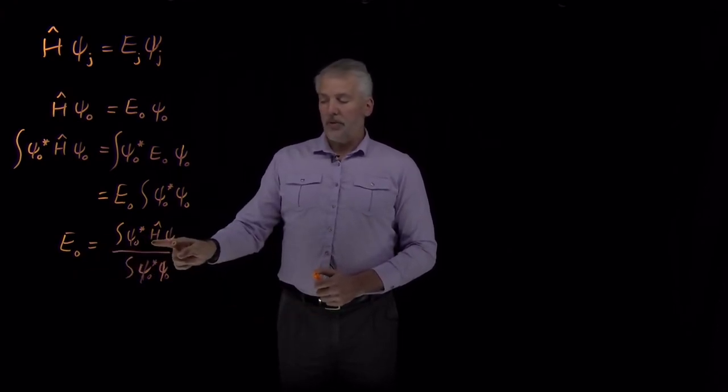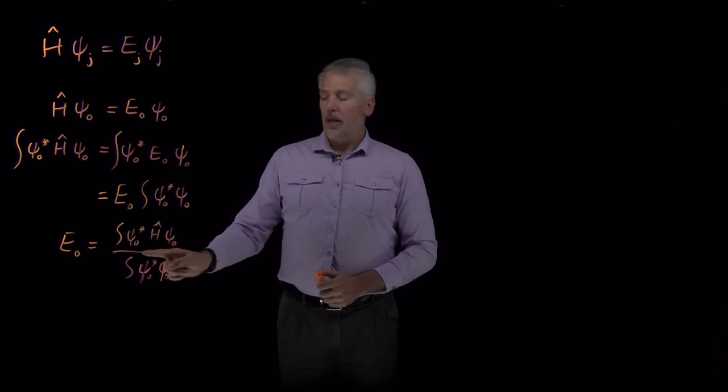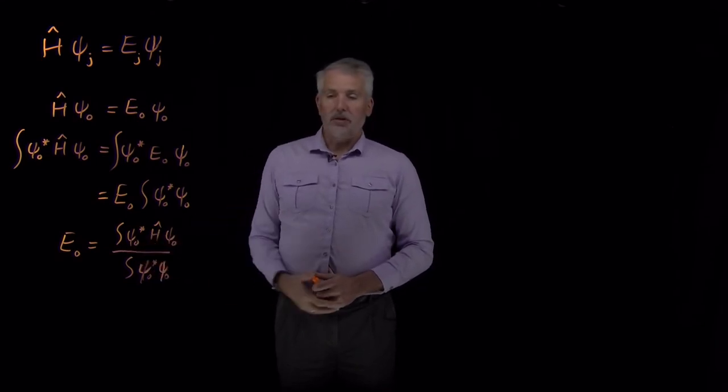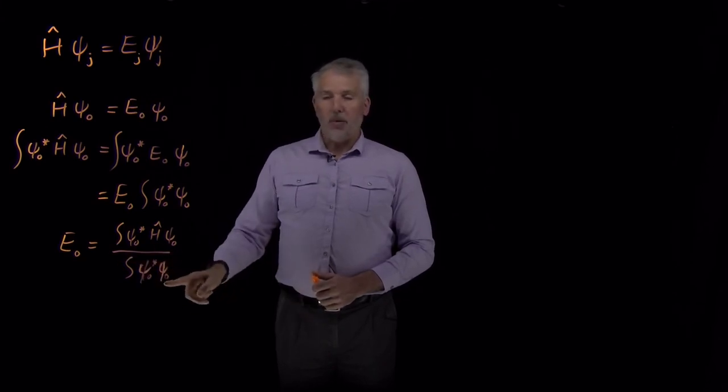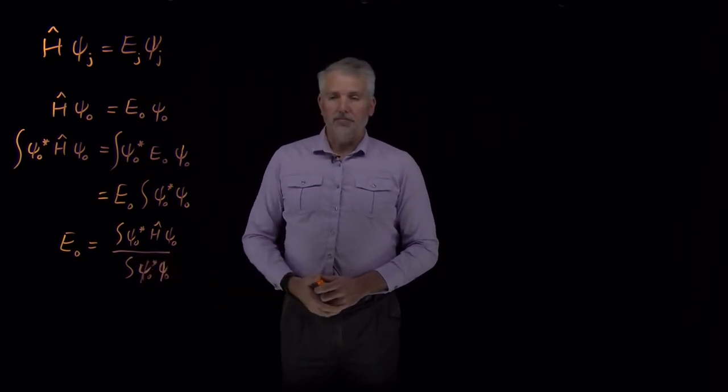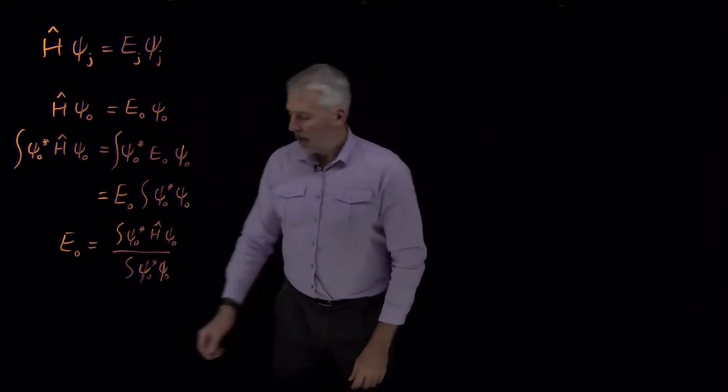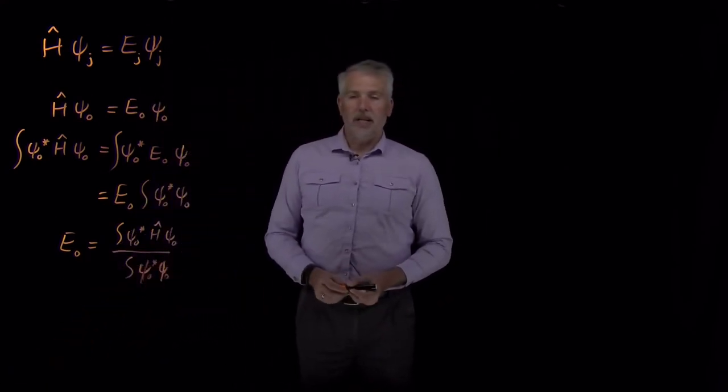Here I have another recipe for finding E₀. It's just a little bit more difficult. I have to still act with the Hamiltonian on the wave function, then multiply by the wave function, then take an integral, and when I'm done, either divide by 1 or divide by a different integral. So if I know ψ₀, I can do this procedure. It hasn't saved me any work, but it is an alternate way of finding the energy.